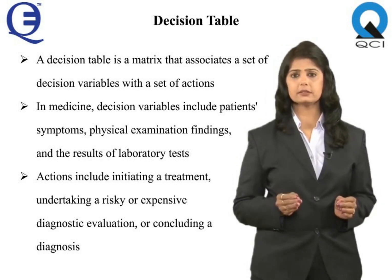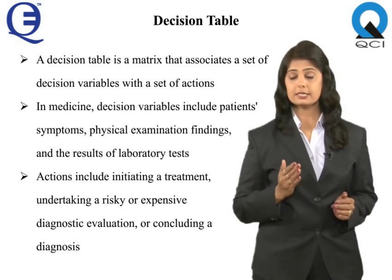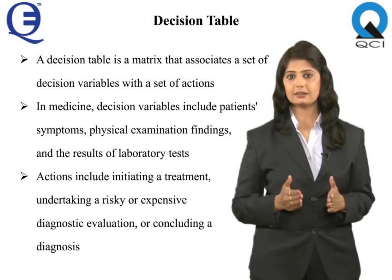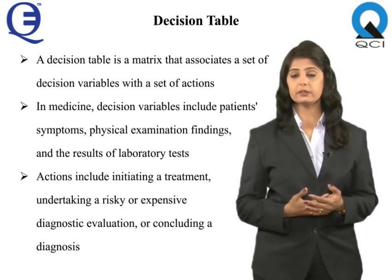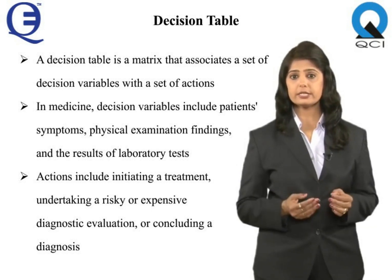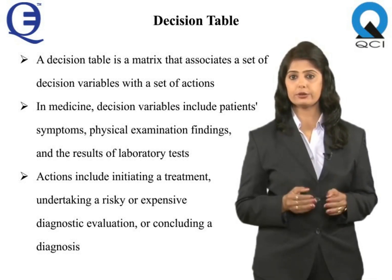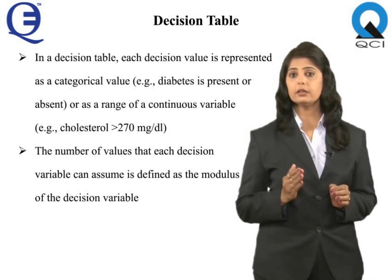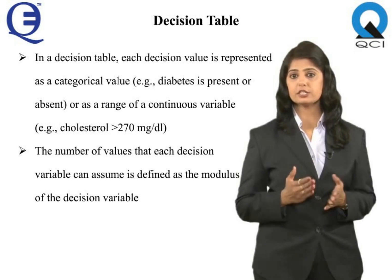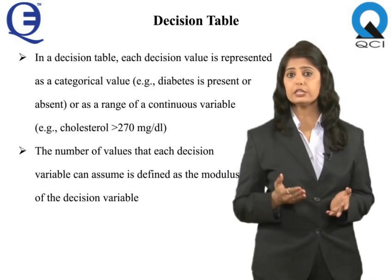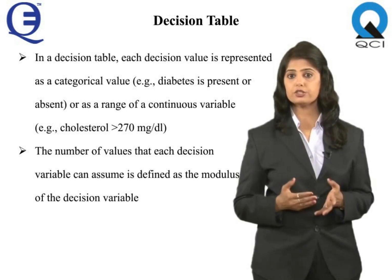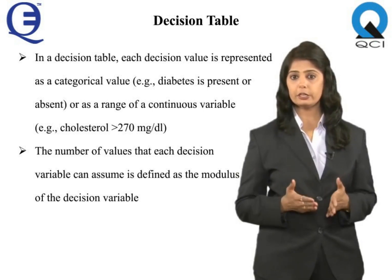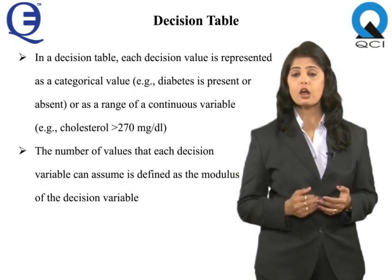A decision table is a matrix that associates a set of decision variables with a set of actions. In medicine, decision variables include a patient's symptoms, physical examination findings, and laboratory test results. Actions include initiating a treatment, undertaking a risky or expensive diagnostic evaluation, or concluding a diagnosis. Each decision value is represented as a categorical value — for example, diabetes is present or absent — or as a range of a continuous variable, such as cholesterol greater than 270 mg/dL. The number of values each decision variable can assume is defined as the modulus of the decision variable.